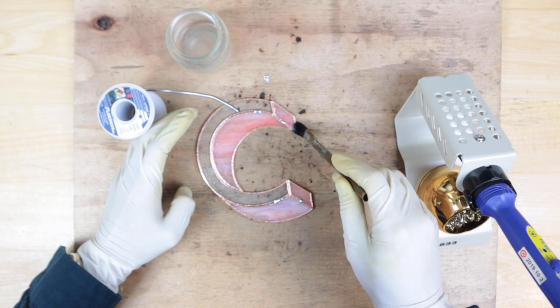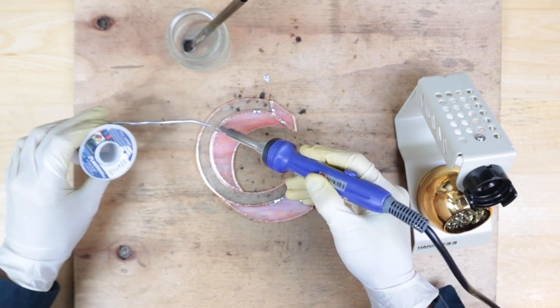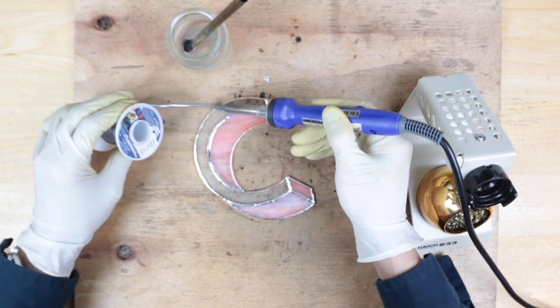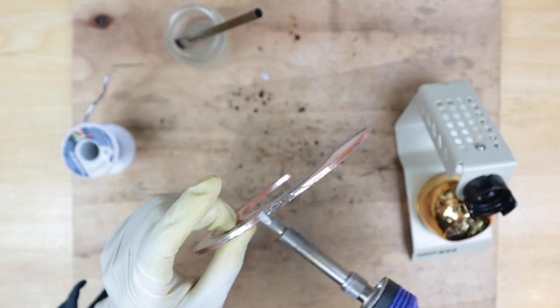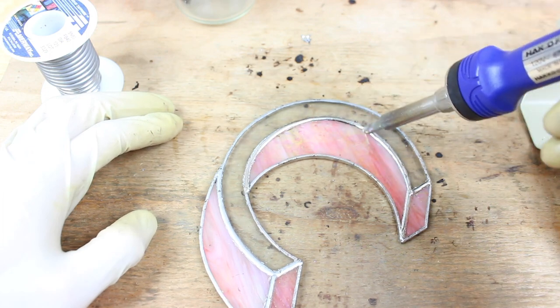Once everything's held together, then go ahead and just add solder all around until all the copper foil is covered. So let's do the same thing to the other side. And that's pretty much it. We'll do the same thing to the rest of the letters.